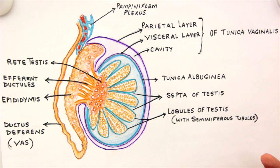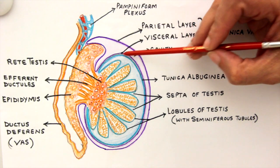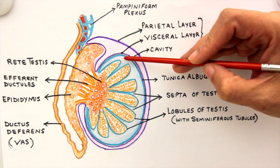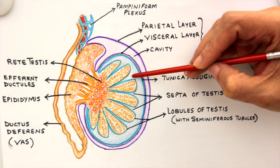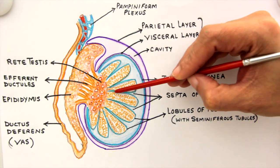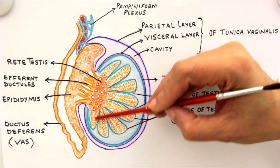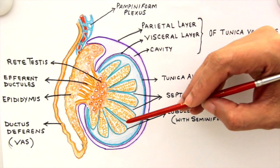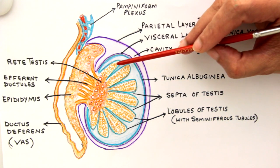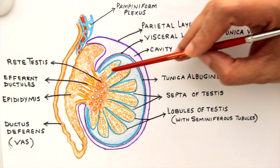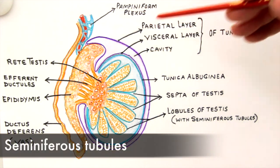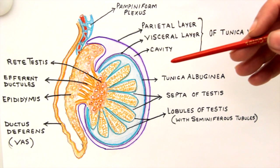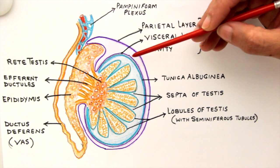So tunica albuginea can be used for the identification of the gender of a fetus. This tough capsule, just like any other capsule of any organ in the body, sends off septae into the substance of the testis, dividing it into lobules or smaller compartments. Each compartment contains coiled structures called seminiferous tubules.